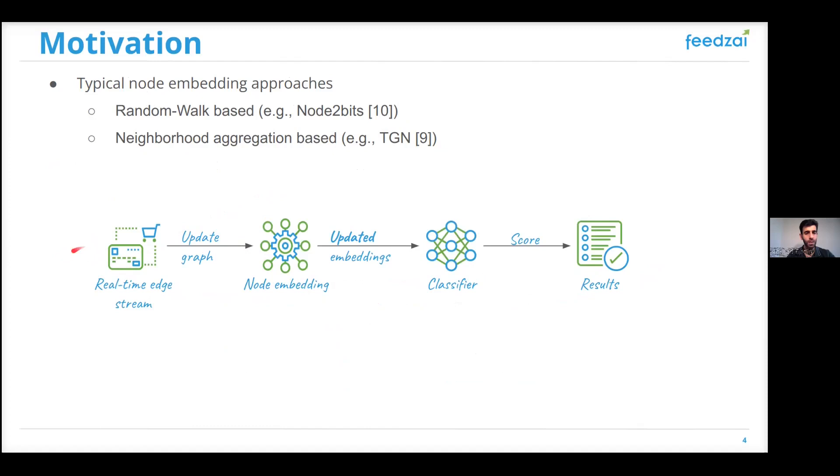Every time a transaction happens, we need to update the graph, generate the node embeddings for the involved nodes, and then the updated embeddings can be used by the classifier that will generate a score depending on the task in hand. One issue with this scenario is that the node embedding techniques are time consuming. Therefore, it's infeasible to deploy such a pipeline in a production environment that demands real-time decisions.